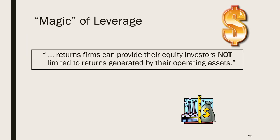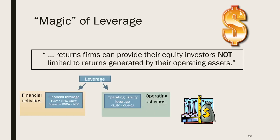The returns firms earn are not limited to the returns generated by their operating assets. Firms can use levers — financial and operating leverage — to provide different and hopefully higher returns to equity investors than a firm earns on its operating assets. Firms do this by using the resources from debt providers and creditors to help fund a firm's operating assets, relieving equity investors from having to fund all of a firm's operating assets themselves.